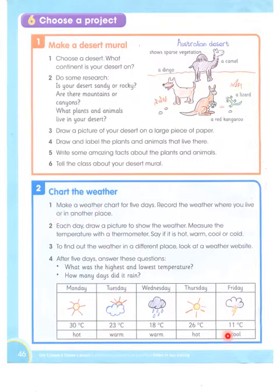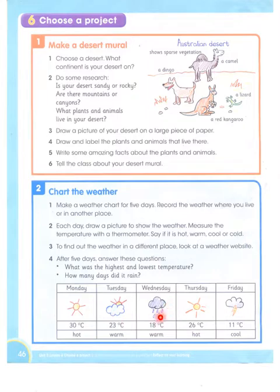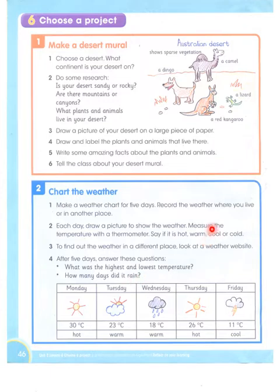You have to make a chart of the weather — a 5-day weather chart. You can see when it's sunny, cloudy, or there are thunderstorms — all aspects of weather. And after five days, what was the highest and lowest temperature? How many days did it rain? This is the assignment that you all have to do in class.